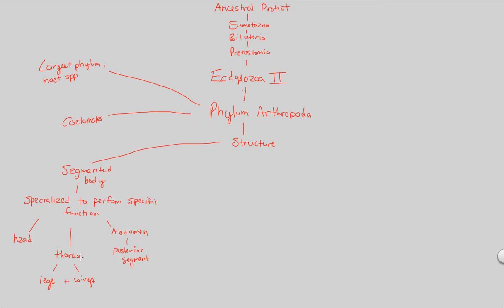And the reason why we have posterior, anterior, dorsal, ventral is because we have that bilateral symmetry, right, from our first lecture on animal diversity. So this is our segmented body. It's specialized. Specialized is good in the animal world, and it's specialized to perform specific functions, which we'll see.